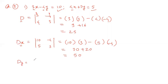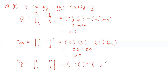Now we find Dy. Instead of y coefficients, we write the constants 10 and 5, while x coefficients 3 and 4 remain as they are. Solving by cross multiplication: 3 times 5 is 15, and 4 times 10 is 40. So 15 minus 40 equals minus 25. That is the value of Dy.